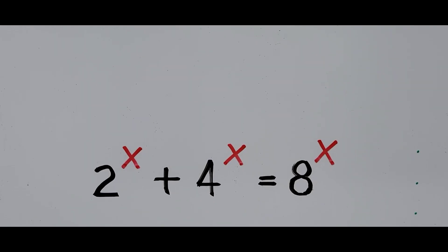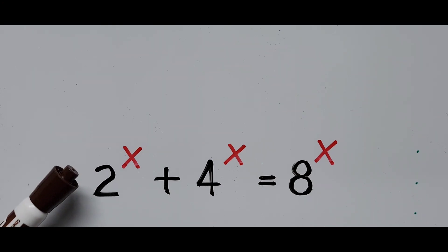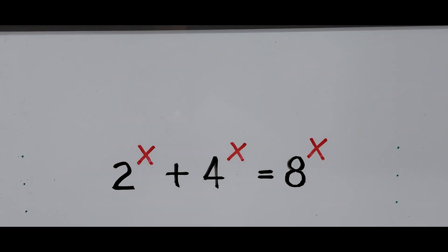Hello everyone. We have here an exponential equation: 2 to the power of x plus 4 to the power of x equals 8 to the power of x. In this video we'll be solving for the real values of x.